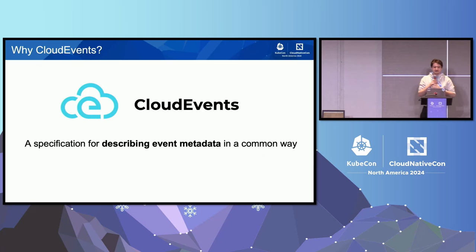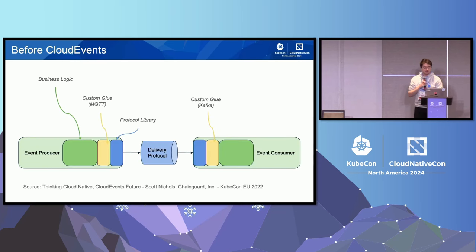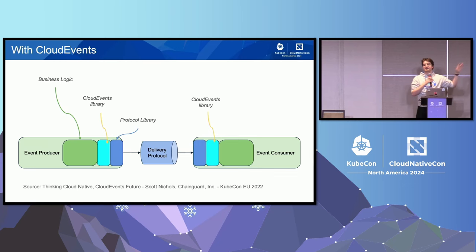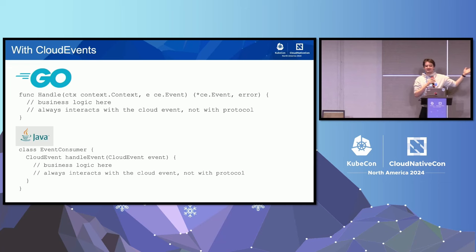This is where Cloud Events comes in. It's basically a specification for describing the metadata in a common way, with different ways to bind this metadata onto all these different protocols. So you pick which protocol you're sending into and Cloud Events maps your data into that protocol. Whereas before we had custom glue in yellow, with Cloud Events we just call the Cloud Events library on every side. Our business logic only ever produces and consumes Cloud Events. In Go, you have a handle function that takes in a Cloud Event; in Java, an event consumer with a handle event method.